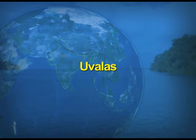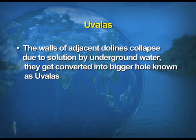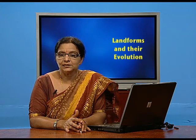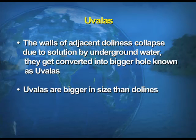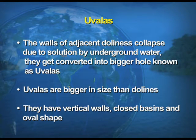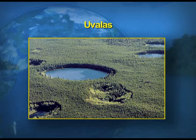Another feature is uvalas. When the walls of adjacent dolines collapse — again due to solution by underground water — they get converted into bigger holes known as uvalas. Uvalas are like dolines but bigger in size, with vertical walls, closed basins, and an oval shape.